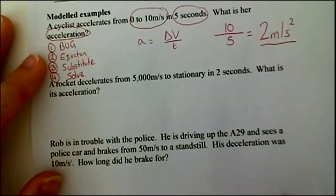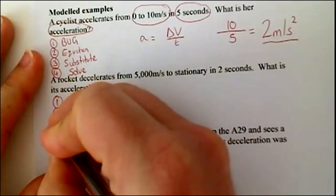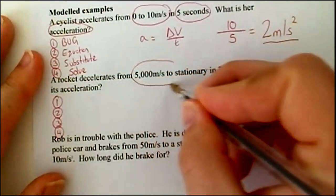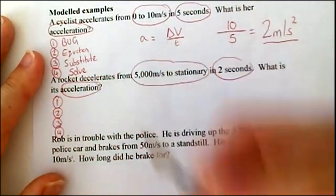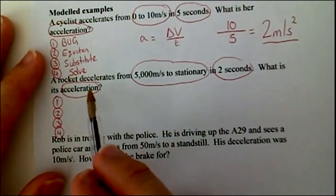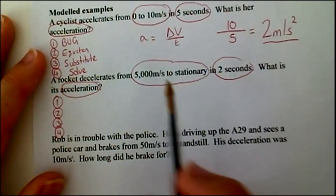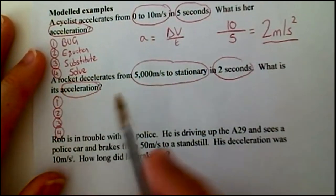Okay, let's do one more together. So, again, if you need to, just jot down your four key steps. So, bug it. We've got five thousand metres per second to stationary, two seconds, and acceleration. It's about a rocket, but to be honest, I don't really care what it's about, because all I'm worried about is to answer the questions.